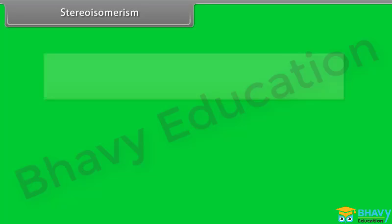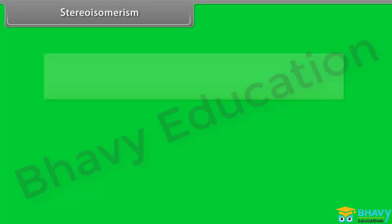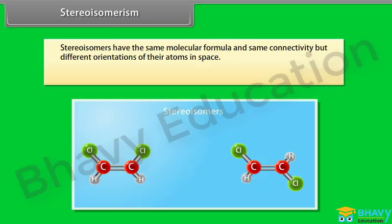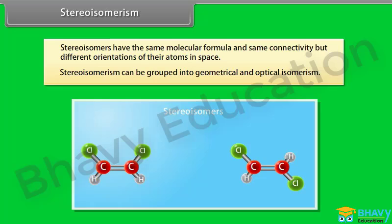Stereo-isomers have the same molecular formula and the same connectivity but different orientations of their atoms in space. Stereo-isomerism can be grouped into geometrical and optical isomerism.